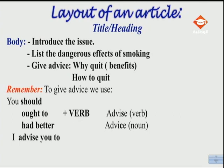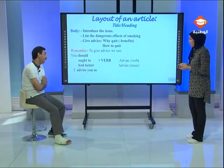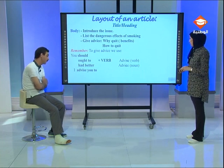Remember: 'advise' — when using it as a verb, spell it with an S and it's pronounced with a Z sound. But when using it as a noun, it's written with a C: 'advice.' You say 'a piece of advice,' not 'an advice' — like 'information,' it's uncountable. You can say 'some advice' but never 'advices.' Also remember to have a conclusion in your article — a final opinion or recommendation about the topic.